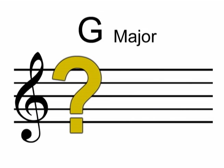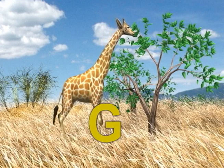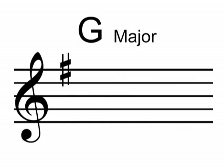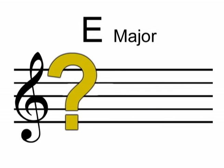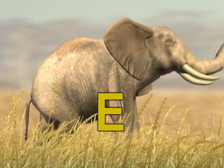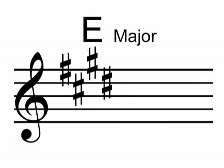If I say, how many sharps are there in the key of G major? You think G, giraffe — location one. G major has one sharp. If I say, how many sharps are there in the key of E major? You think E, elephant — location four. So E major has four sharps.